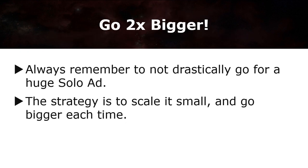After you've identified your target audience and found a mailing list that works for you, remember to keep scaling two times bigger than your previous round. For instance, if you purchase 50 subscribers on a list and it works, continue with 100 subscribers the next round. Continue each round until you've accumulated your ideal list. Always remember not to drastically go for a huge solo ad — minimize risk and maximize your return. The strategy is to scale small and go bigger each time, so you don't waste resources on gaining unwanted subscribers.